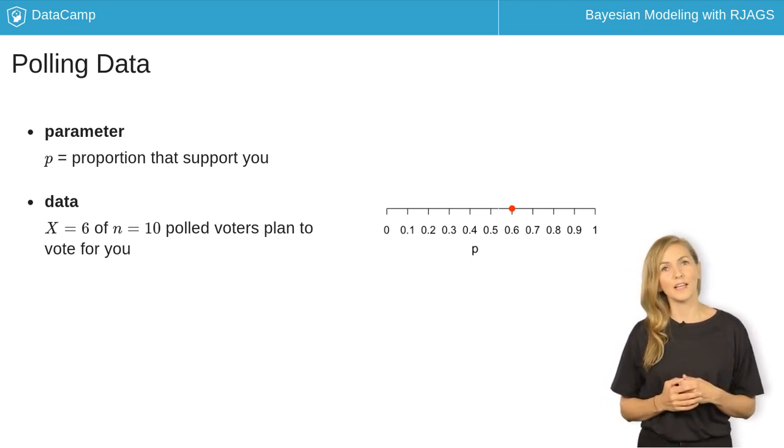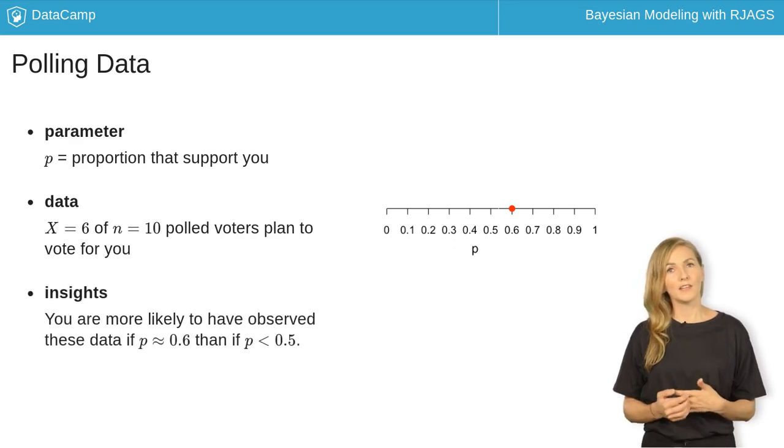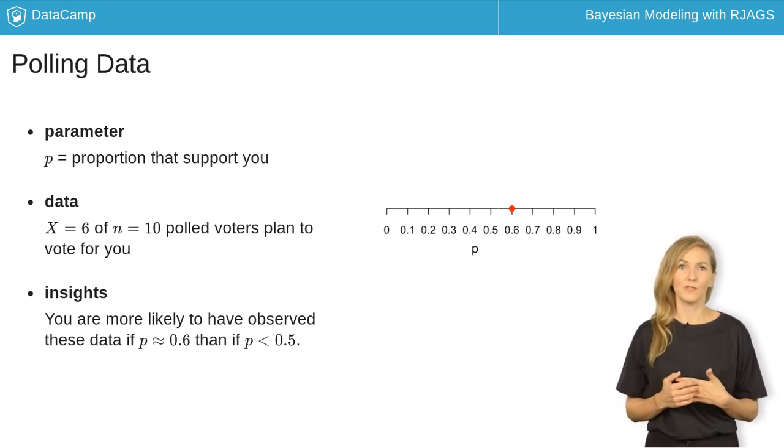These data provide some evidence about p. For example, you're more likely to observe such poll results if your underlying support were also around 0.6 than, say, if it were below the 0.5 winning threshold.